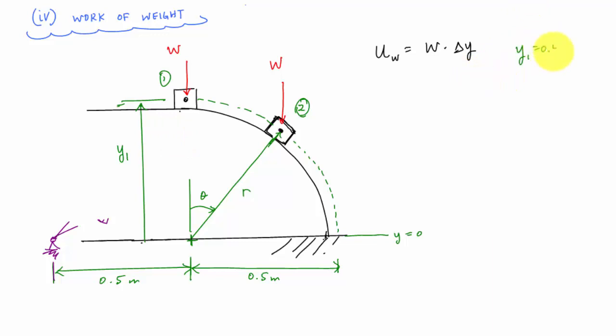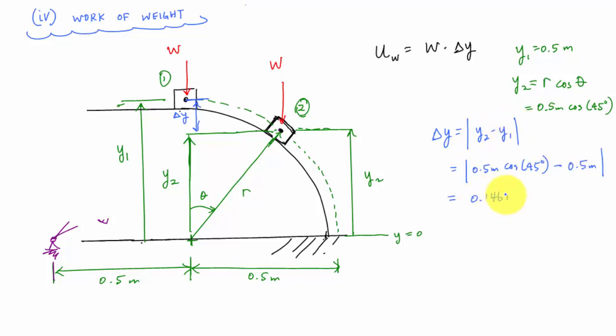And y2 was just this distance right here, which is exactly the same as, if I look at this little triangle right here like this, this distance right here is also y2. And y2 is just r cosine of theta. Again, would just be 0.5 meters cosine of 45 degrees. And the distance from here to here is delta y. Now I like to deal with just magnitudes now and then decide on the sign of the work after. Change in y is just y2 minus y1, 0.146 meters.